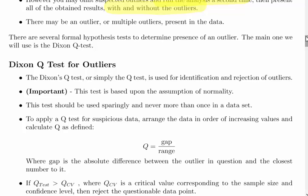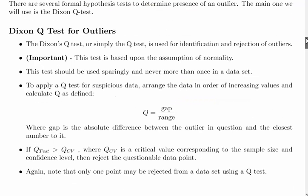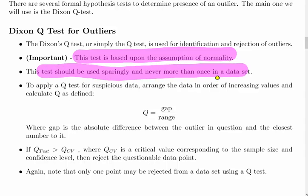The Dixon Q test is used for the identification and rejection of outliers. This is important - it relies on the assumption of normality. Also, the test should be used sparingly and never more than once in a data set.